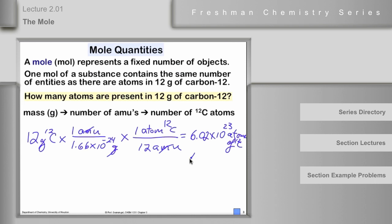And of course you remember this number as Avogadro's number — the number of entities in a mole. You can abbreviate mole as M-O-L if you want to.